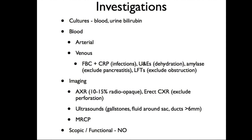For imaging, first do an abdominal X-ray, remembering that only 10–15% of stones are radio-opaque. Also do an erect chest X-ray to exclude perforation, identified by free air under the right hemidiaphragm. Abdominal ultrasound looks for the gallstone itself, fluid around the sac from inflammation, and dilatation of the biliary ducts greater than six millimetres. MRCP — Magnetic Resonance Cholangiopancreatography — is a non-invasive option we'll discuss further.